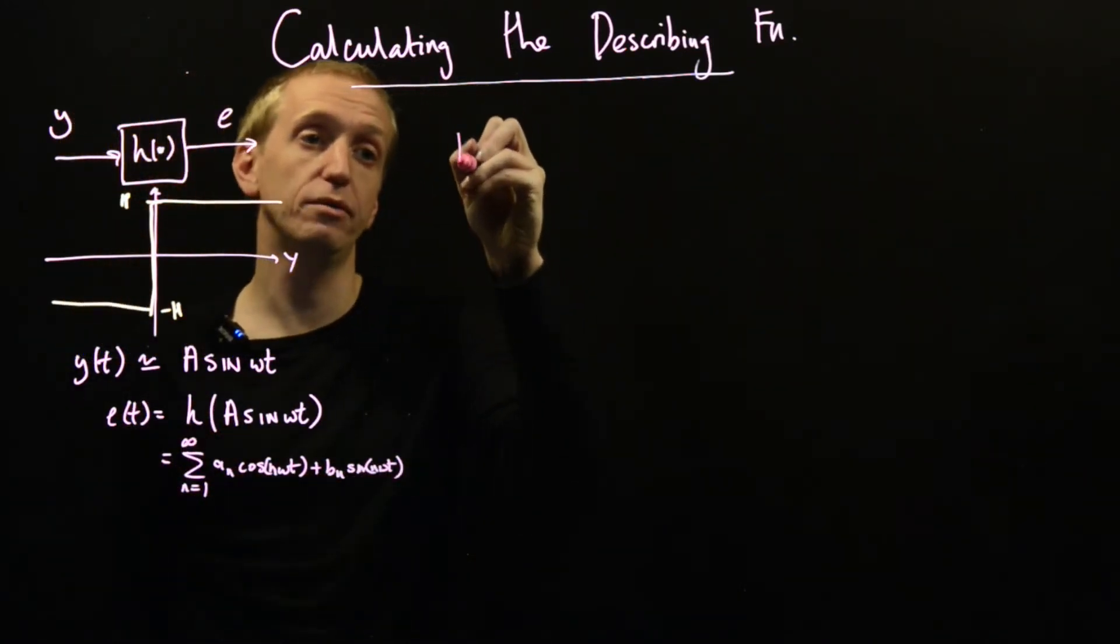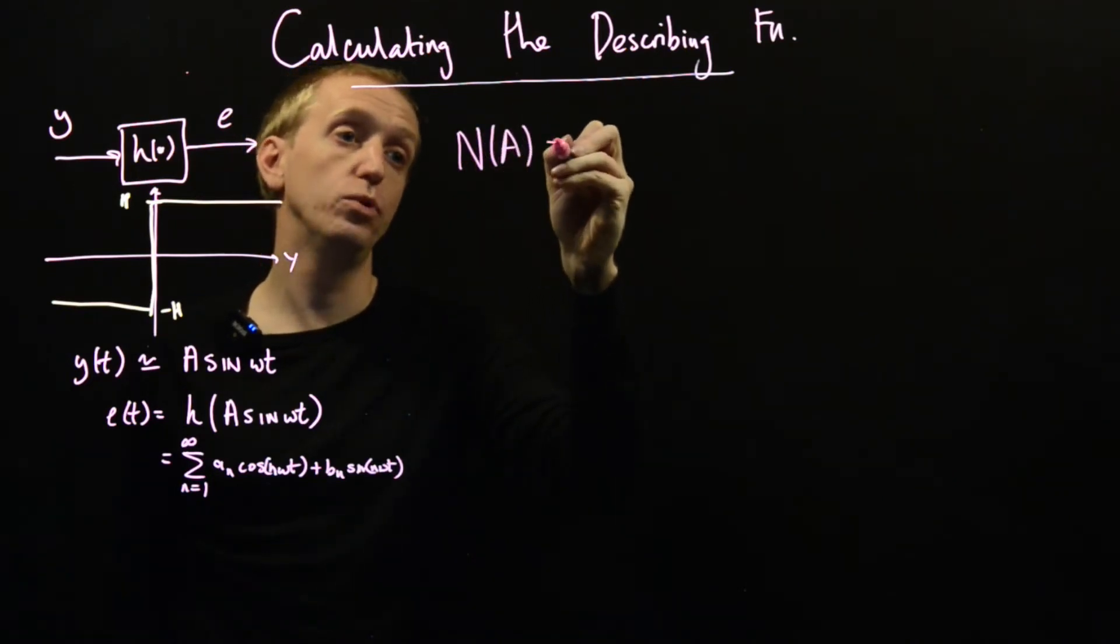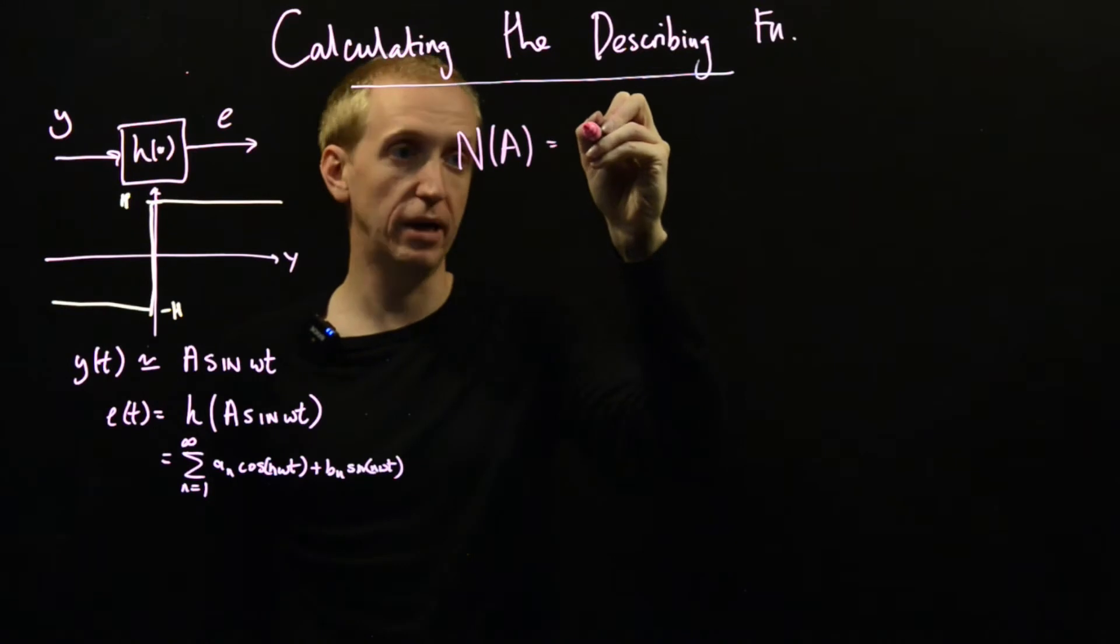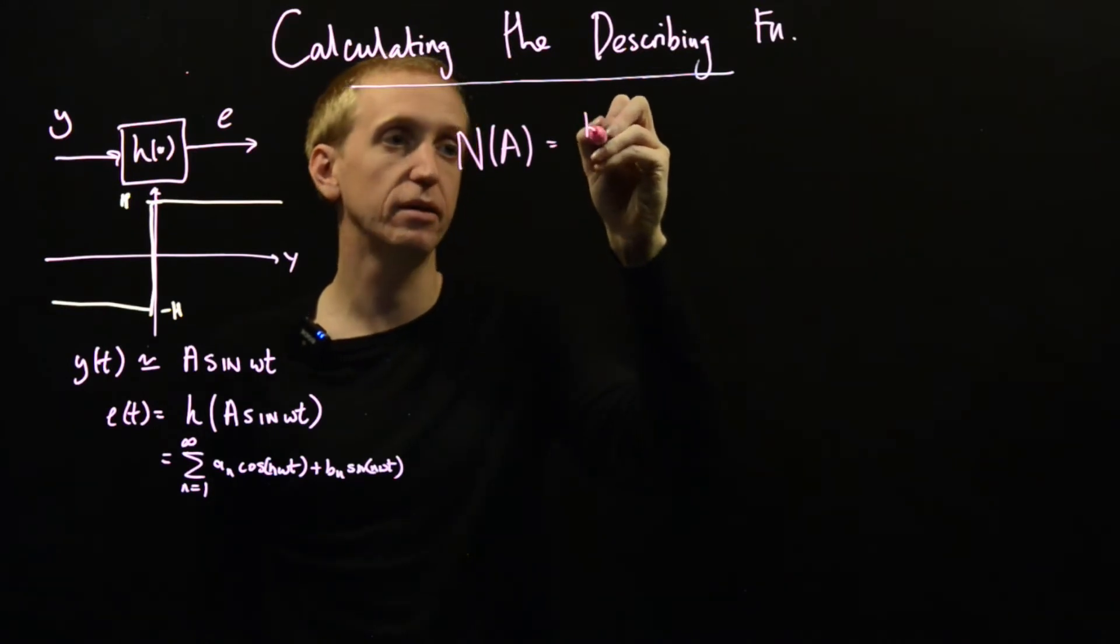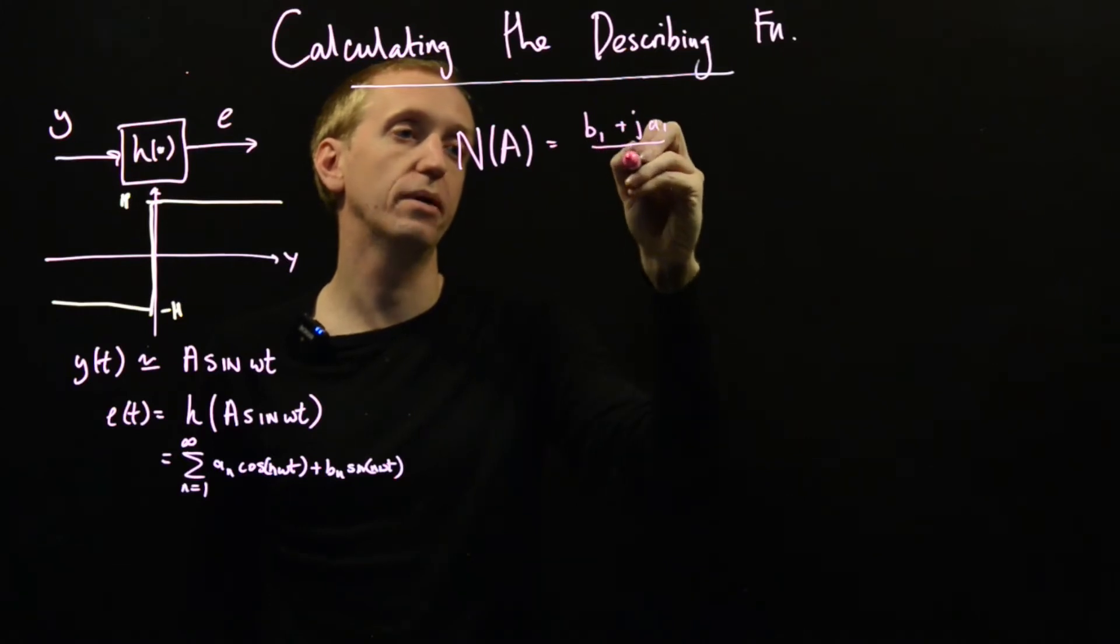And then the describing function, this thing, which was a function of a, was just set to be equal to b₁ plus ja₁ over a.